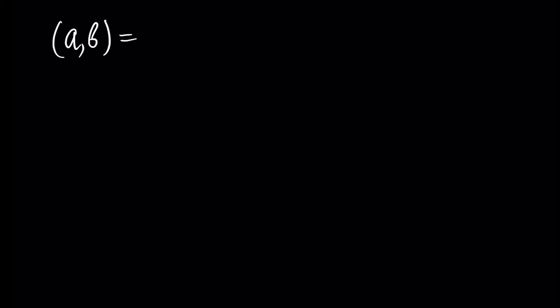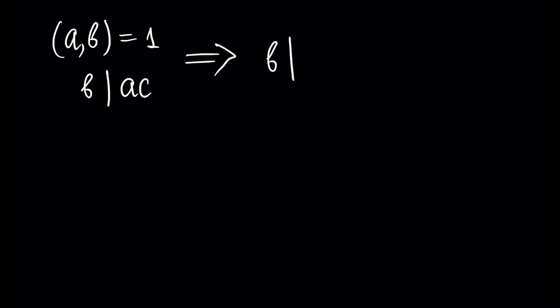Assume numbers A and B are co-prime, or GCD of A and B is 1, and assume B divides number AC. Since A and B are co-prime, we have to have that B divides C.